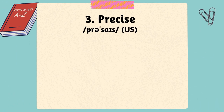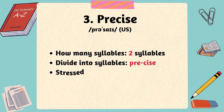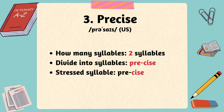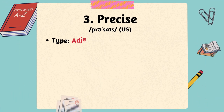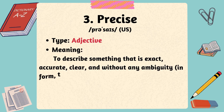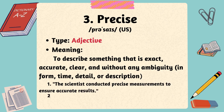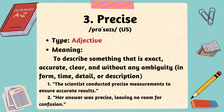The third word is precise. The word precise has two syllables, with the stress on the second syllable. Precise is an adjective and it is used to describe something that is exact, accurate, clear, and without any ambiguity. The scientist conducted precise measurements to ensure accurate results. Her answer was precise, leaving no room for confusion.